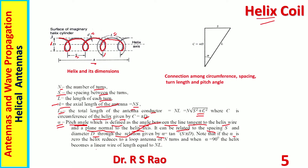Note that if alpha is 0, the helix reduces to a loop antenna of N turns, and when alpha is 90 degrees, the helix becomes a linear wire of length equal to NL. The pitch angle alpha is tan⁻¹(S/πD). In the triangle, C = πD and S are the two sides, making it easy to see that alpha is tan⁻¹(S/πD).